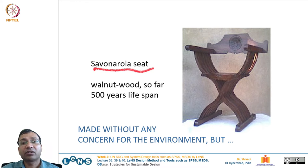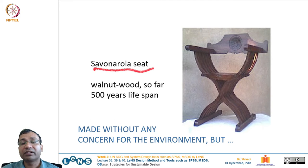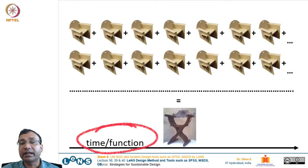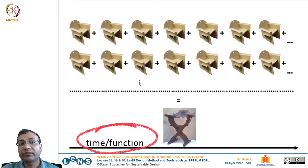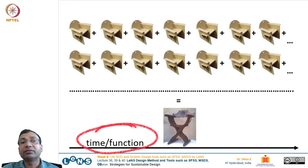But if you compare the time and functionality — how many cardboard chairs are needed to render the same service that a single wooden chair has provided for a long period — there is a factor of time involved. This is where product design for longevity and extended lifespan comes into picture: we consider an efficient utilization period so that the product carries on its job longer and prevents the need for a second product.